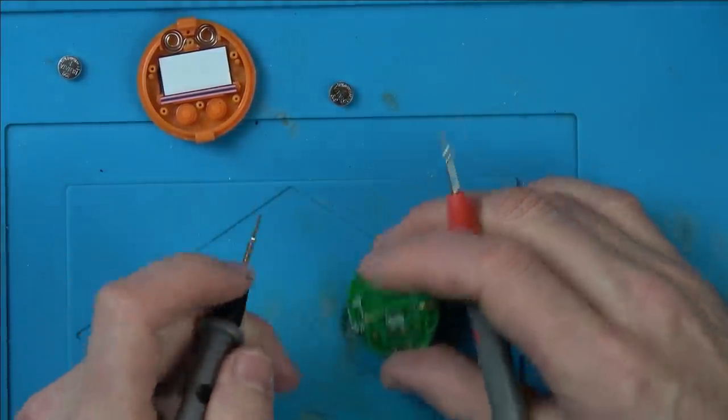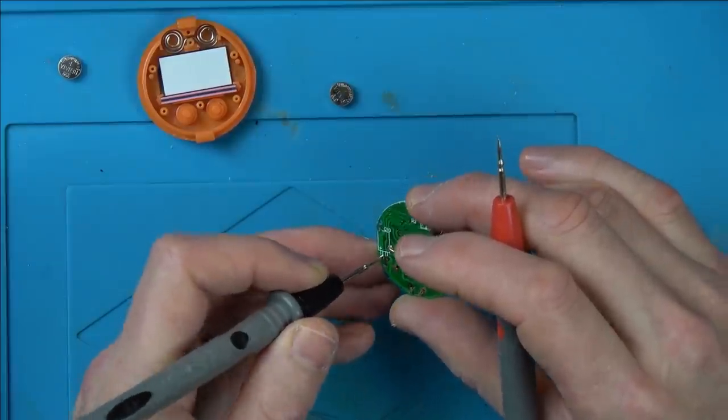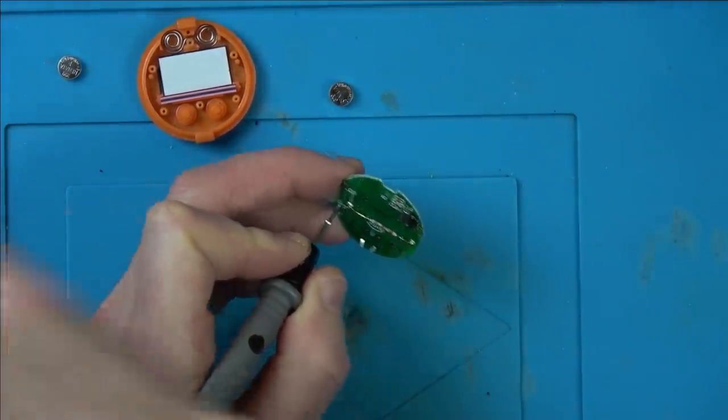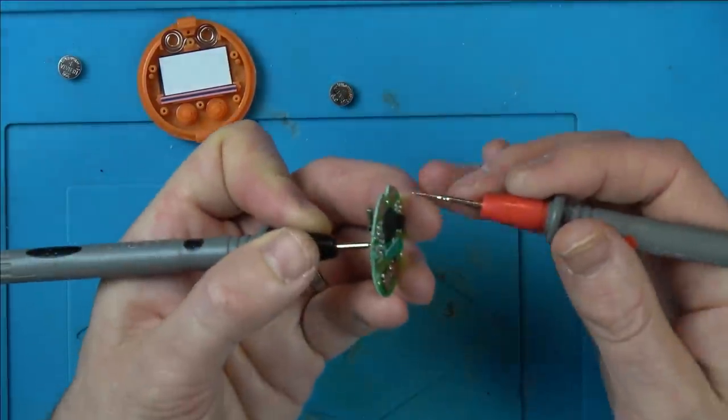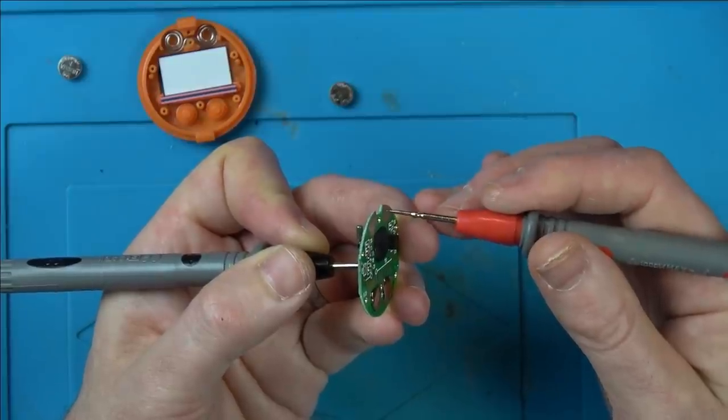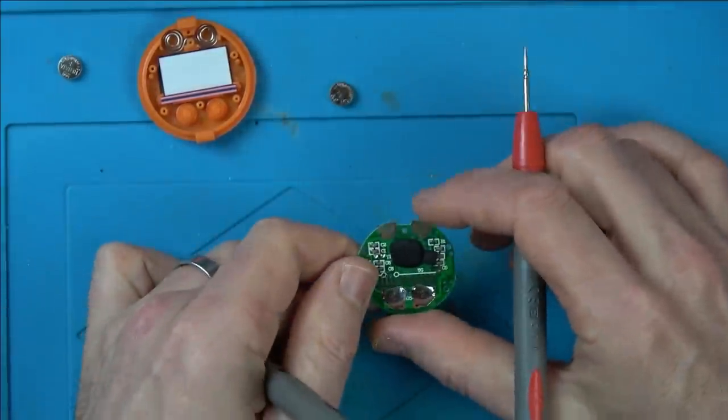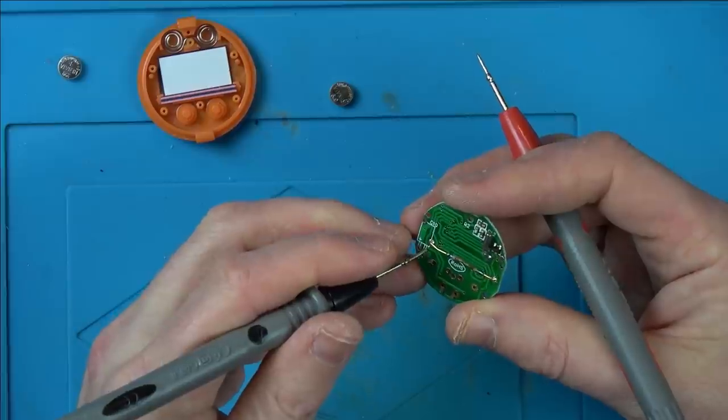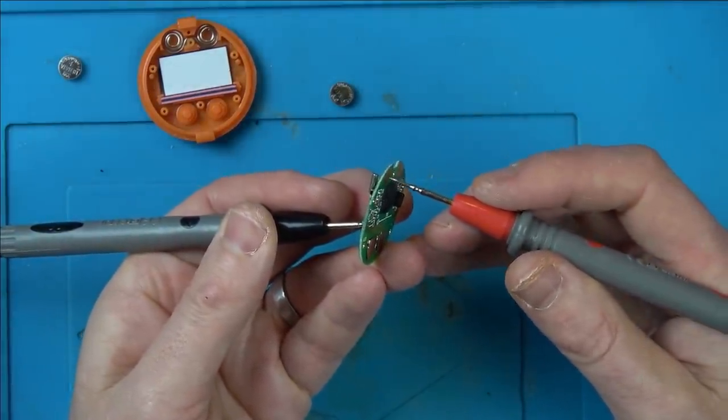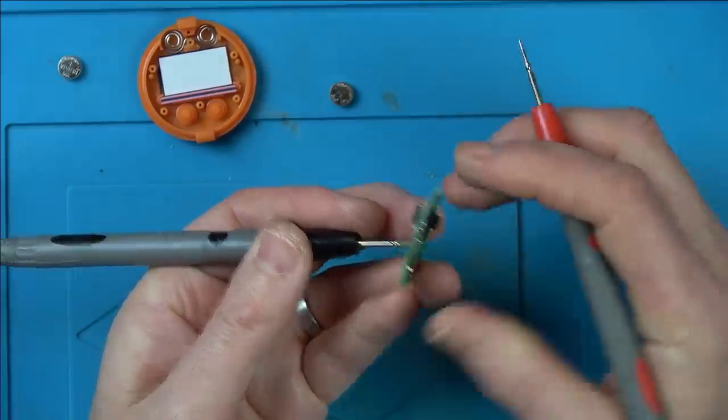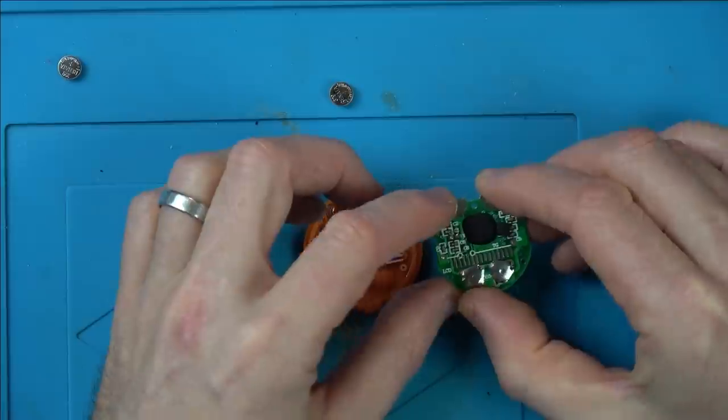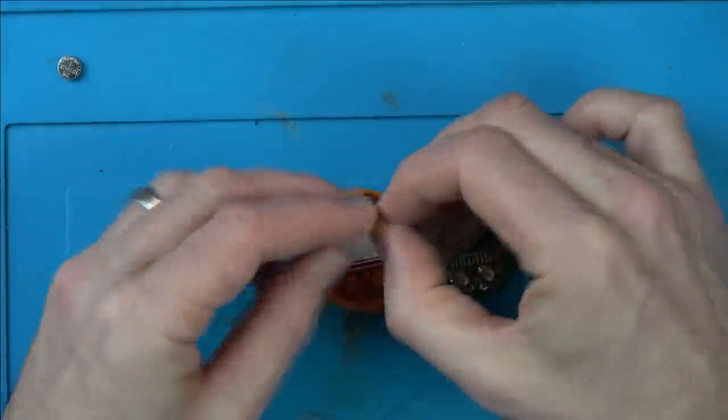So why don't I just put the probe on the positive, see what pad it's coming up on, and do the same on the negative. And that will tell me definitely then which way the batteries go round. Because, remember, this has been apart before, so it doesn't mean that the original way that they were is the correct way. So I'm on the positive, got my meter set to continuity. Right, so that's the positive side. Is that how I had it before? No, it's not. I had it the other way. Now let's check the negative.